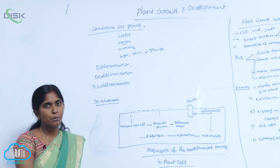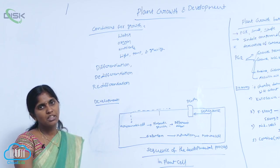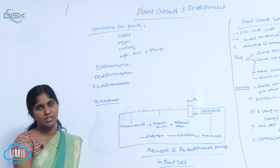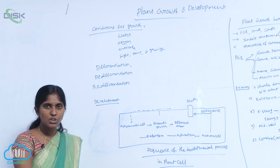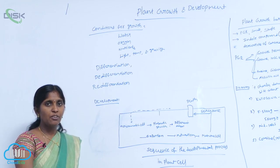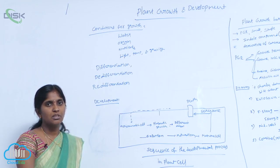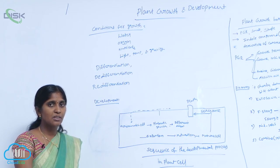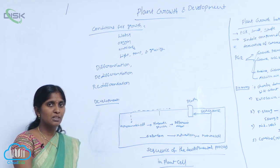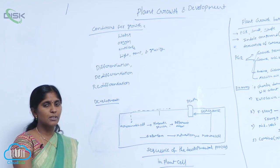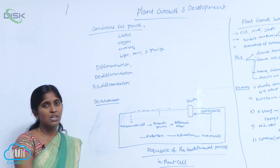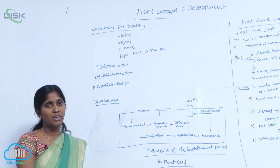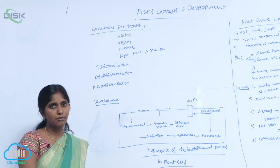For example, take aerenchyma. Aerenchyma is present in hydrophytes. What is the function of it? It is filled with air. So, when these cells are present in aquatic plants, they give lightweight and also aid in floating.